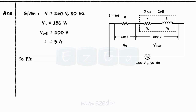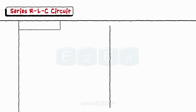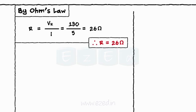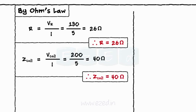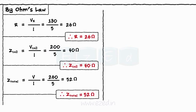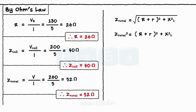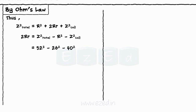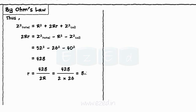By applying Ohm's law, R equals voltage across the resistor upon current I, giving R equals 26 ohms. The impedance of the coil is Z_coil equals voltage across the coil upon I, which equals 40 ohms. The total impedance equals 52 ohms. Squaring, Z_total squared equals (R plus R_coil) squared plus XL squared, where R_coil squared plus XL squared equals Z_coil squared. Rearranging and substituting values, the resistance of the coil equals 8.23 ohms.